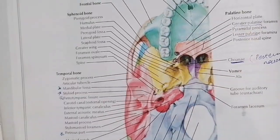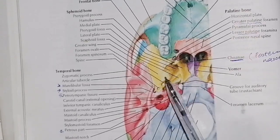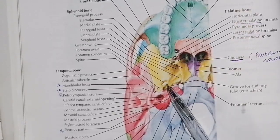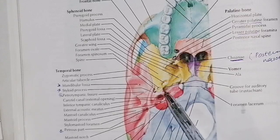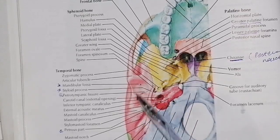Now here we have a groove which is called the groove for the auditory tube. This region involves the sphenoid bone and also the temporal bone.